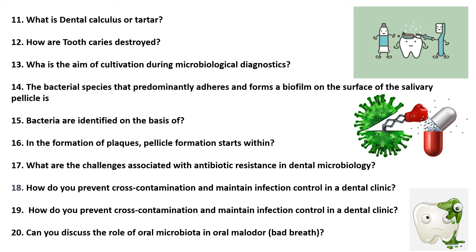Bacteria are identified on the basis of what? This is a very basic question. Bacteria are identified on the basis of their shape, their staining, their morphological and growth properties, and their biochemical properties. In the formation of plaques, pellicle formation starts within two to three minutes of brushing. This is the first step in the formation of plaques.